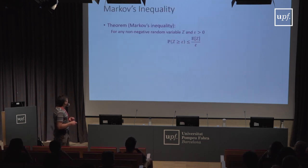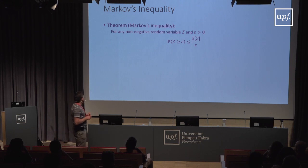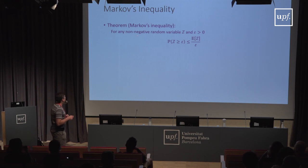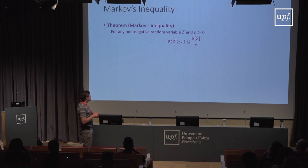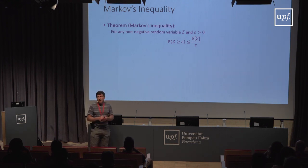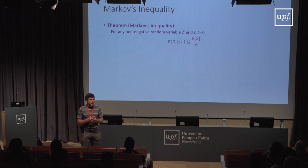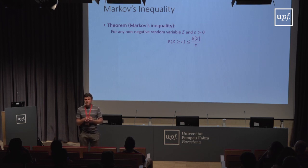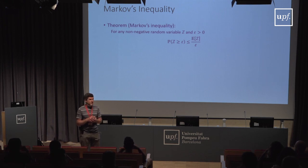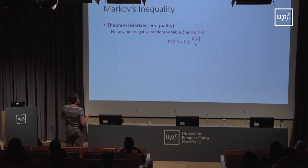Now I'll show a few basic concentration inequalities — inequalities that bound the probability that the observed empirical average significantly underestimates the true average. The most basic one is Markov's inequality. Markov's inequality states that if you have a non-negative random variable z and any parameter epsilon greater than zero, the probability that z exceeds epsilon is bounded by the expectation of z over epsilon.